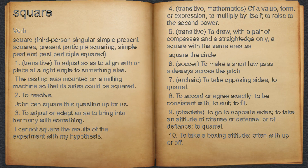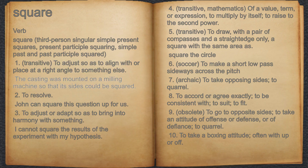Square. Verb. 31. Transitive, to adjust so as to align with or place at a right angle to something else. For example, the casting was mounted on a milling machine so that its sides could be squared. 32. To resolve. For example, John can square this question up for us.